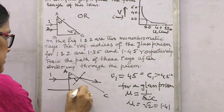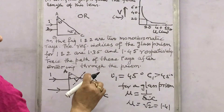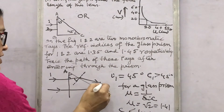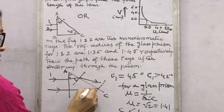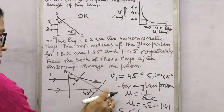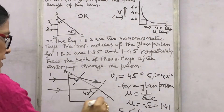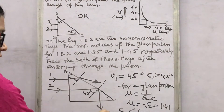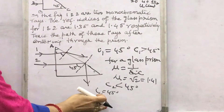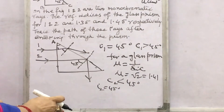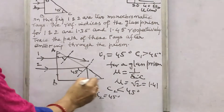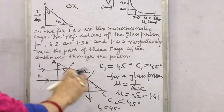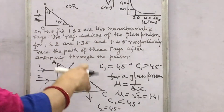For ray 2, the refractive index is 1.45, which is greater than 1.41, so its critical angle C2 will be less than 45°. The angle of incidence is the same — 45° — which is greater than the critical angle C2, so TIR will take place for ray 2. It will come down and exit from surface BC perpendicular to it. So: ray 1 undergoes simple refraction, ray 2 undergoes TIR.